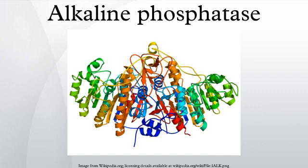Alkaline phosphatase is a hydrolase enzyme responsible for removing phosphate groups from many types of molecules, including nucleotides, proteins, and alkaloids. The process of removing the phosphate group is called dephosphorylation. As the name suggests, alkaline phosphatases are most effective in an alkaline environment. It is sometimes used synonymously as basic phosphatase.